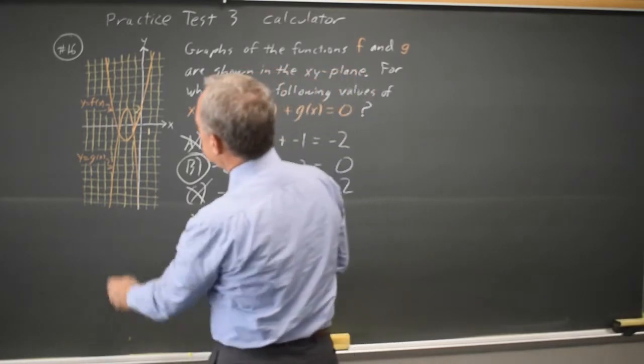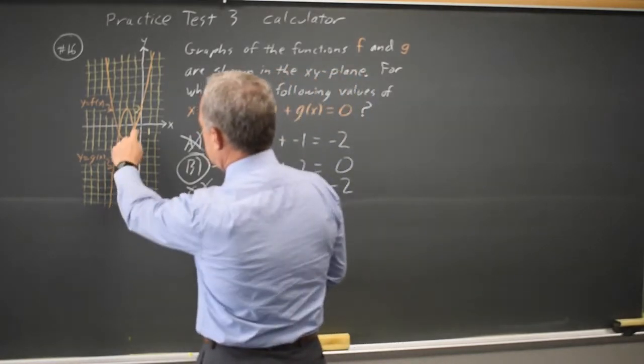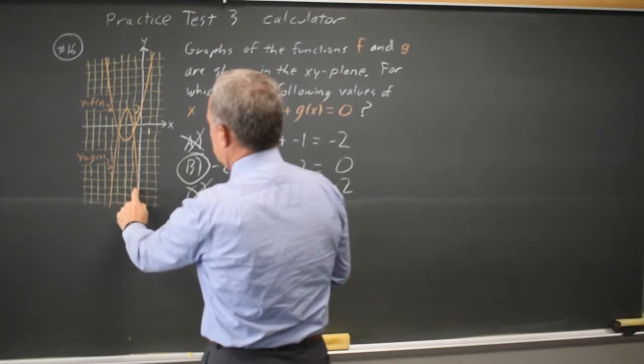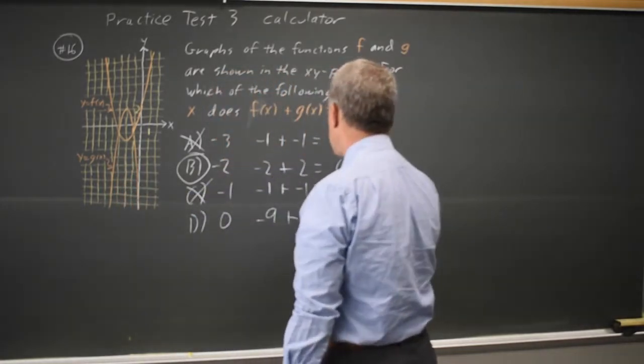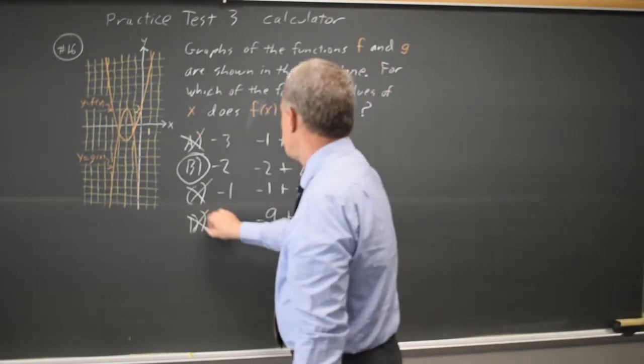And choice D is 0. f of x is negative, maybe negative 9, and g of x is positive 2. That adds to negative 7, which is not 0.